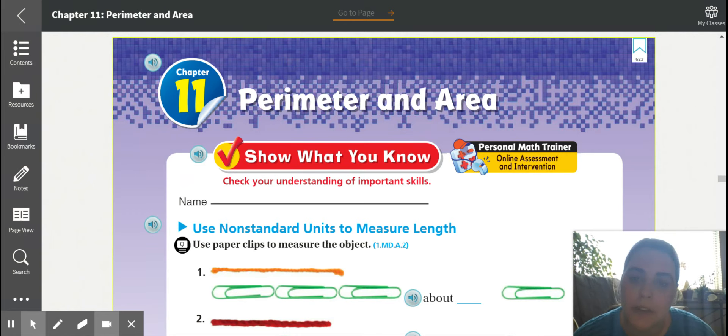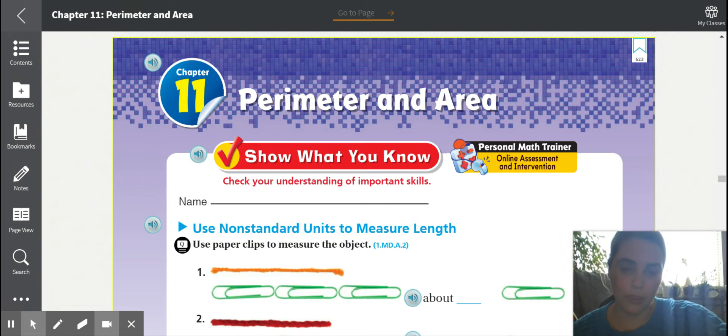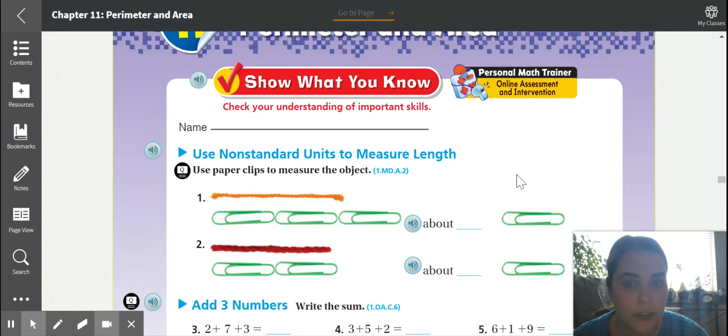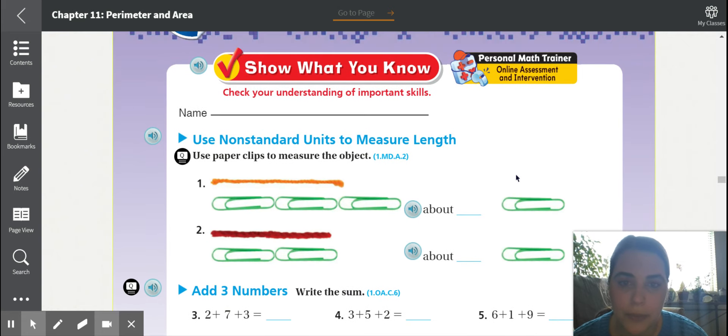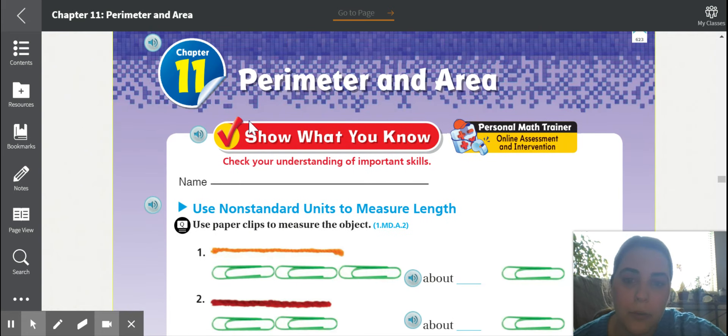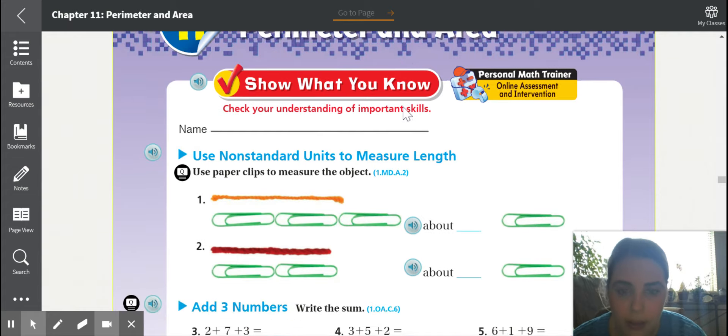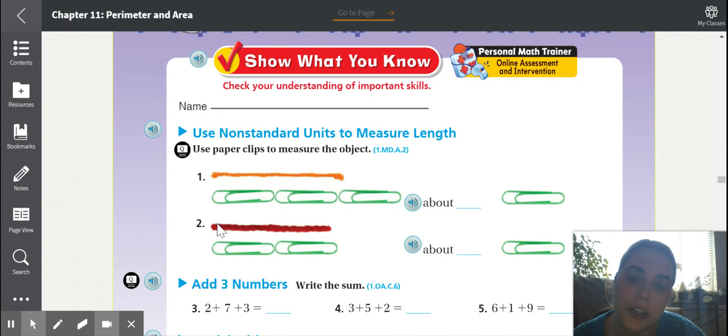The title of chapter 11 is called Perimeter and Area, and those might be some new words for you. That's going to be the focus of our chapter. So we're going to get started on Show What You Know. Questions one and two come from chapter 10, which we have not done yet, but we can answer these anyways. We're talking about measurement.